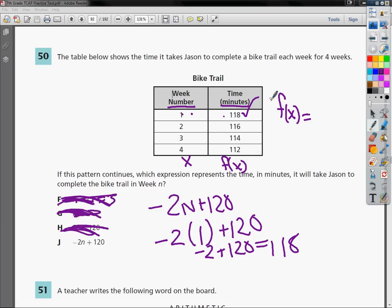Let's try plugging in 2. Negative 2 parentheses 2 plus 120. When I plug in 2, I do 2 times negative 2, which gives me negative 4. Plus 120 gives me 116. So I plugged in this and I got this. Things are looking good.